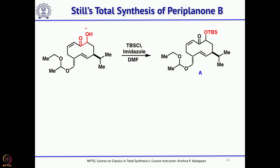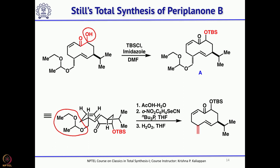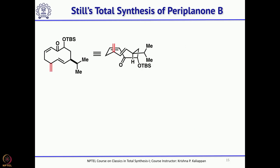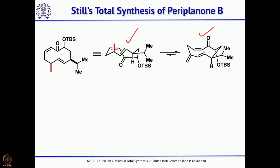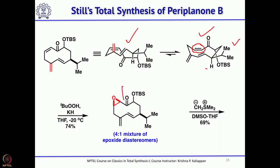At this point, he decided to protect the hydroxyl as a TBS ether and remove the ethoxyethyl group and convert it into the exocyclic double bond first. Now you have everything except the two epoxides. Looking at the low-energy conformation of this 10-membered ring — there are two conformations and the ring can flip — in the low-energy conformation, epoxidation of this double bond will give the beta epoxide. At this stage, he did the epoxidation of the alpha-beta unsaturated ketone selectively and obtained the beta epoxide as the major isomer.